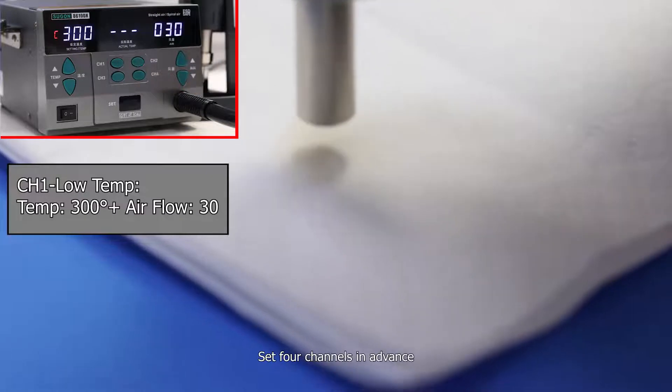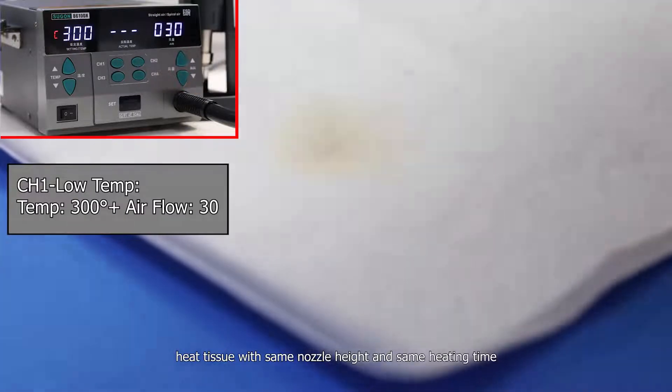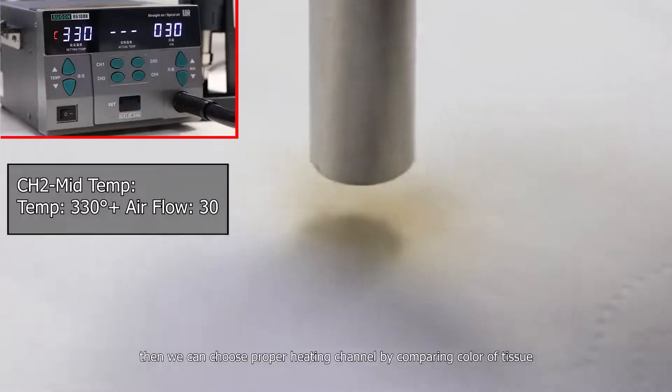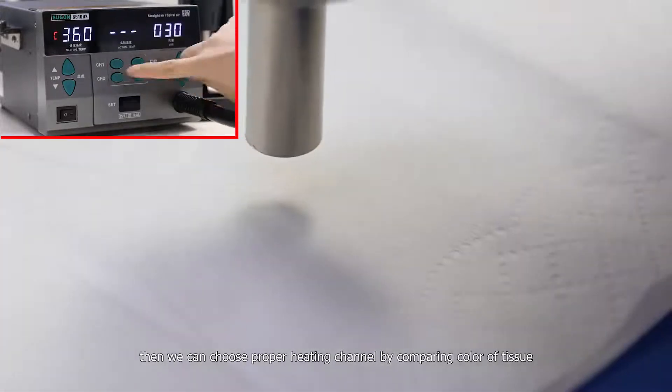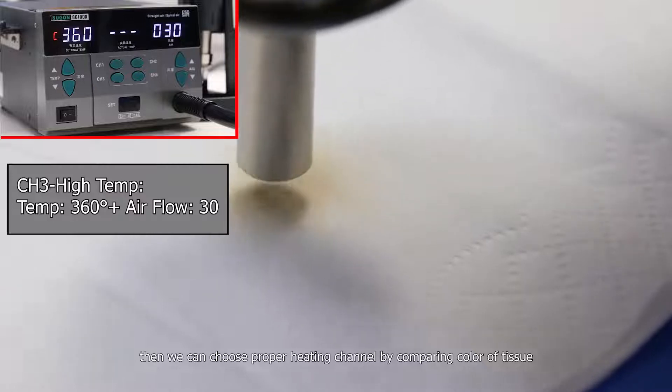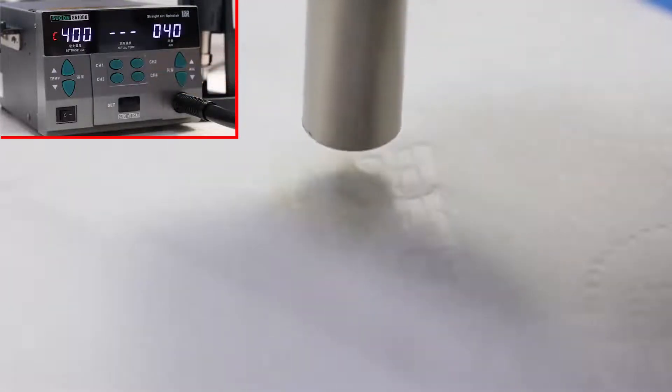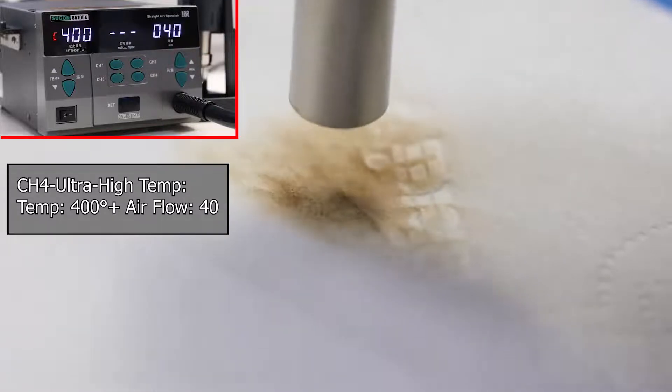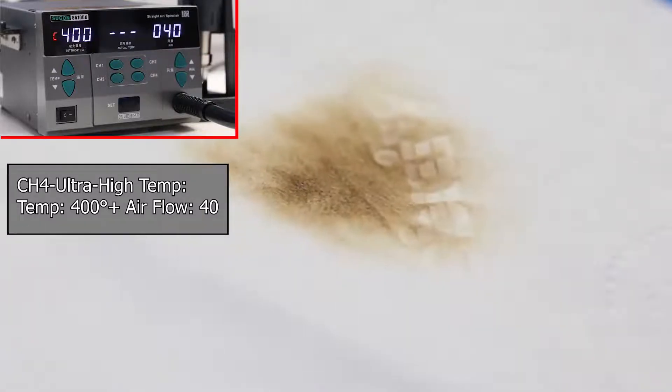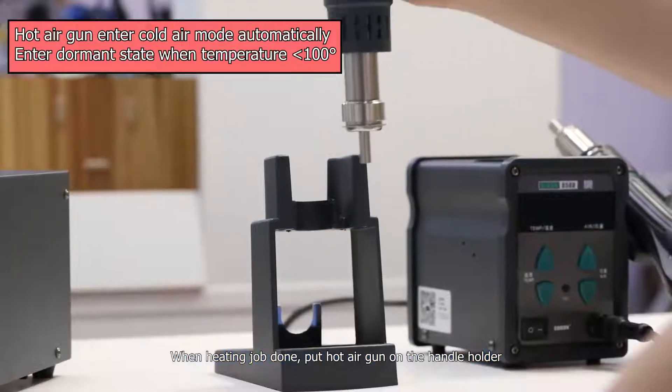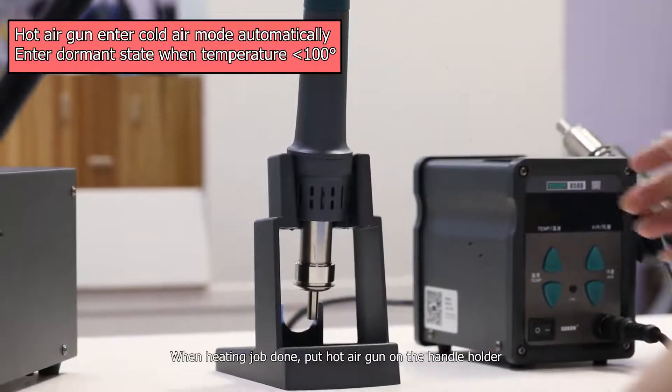Set four channels in advance. Heat tissue with the same nozzle head and the same heating time. Then we can choose proper heating channel by comparing color of tissue. When heating job done, put hot air gun on the handle holder.